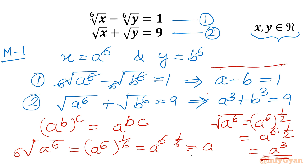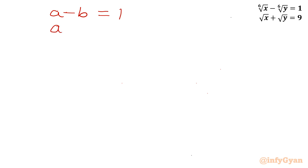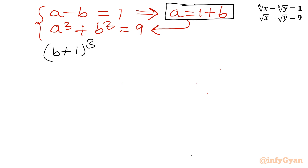This is our new system of equations, where I will find a and b respectively, then substitute back to get x and y. The system is: a minus b equals 1, and a³ plus b³ equals 9. I will use elimination — simultaneous equations with elimination. From the first equation I can write a equals 1 plus b, which I will substitute into the second equation. So the second equation becomes (b+1)³ plus b³ equals 9.